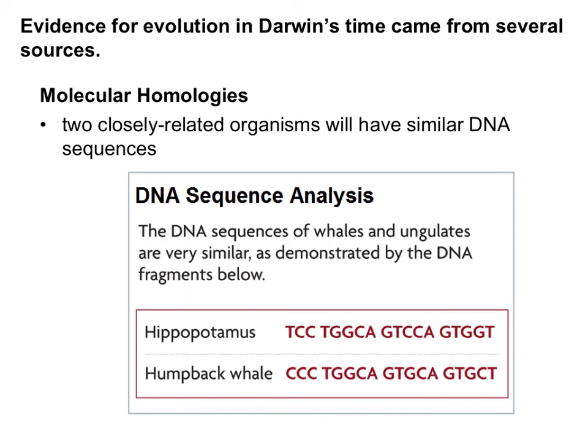Molecular homologies are the newest type of homology we know of, just because we didn't have the technology previously. Molecular homologies mean similarities on the molecular level — specifically DNA sequence analysis or amino acid sequence analysis. Being able to compare similarities in DNA can tell us how closely organisms are related. For example, you might think a hippopotamus and a humpback whale aren't related because they live in such different environments, but they actually are close ancestors, and one bit of evidence is their very similar DNA sequences.